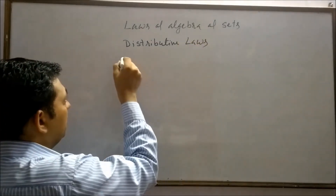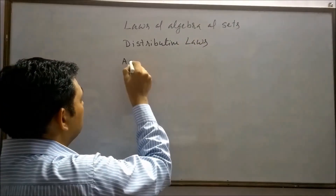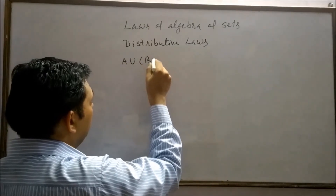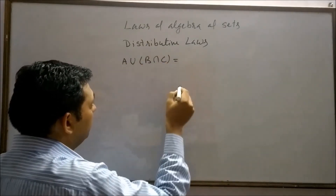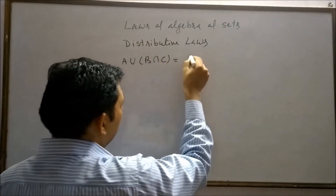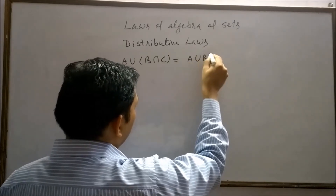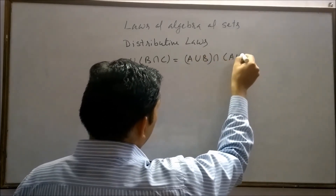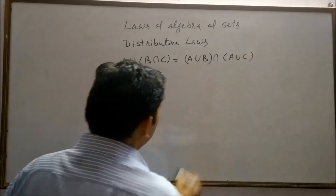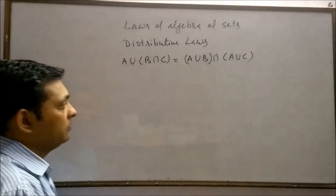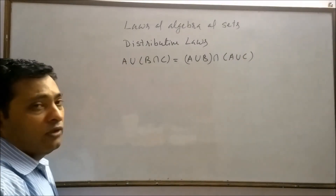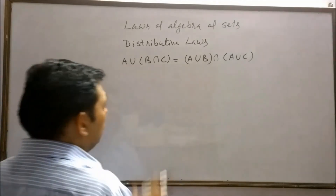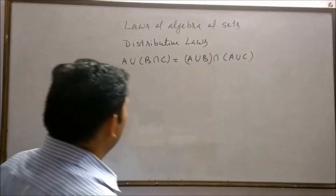This law states that A union (B intersection C) is equal to (A union B) intersection (A union C). Let's try to understand this law with an example.